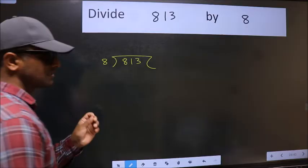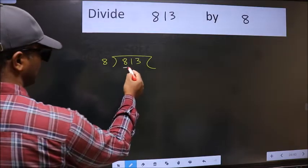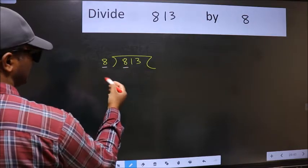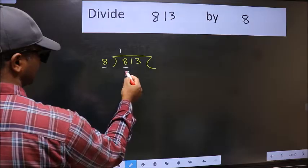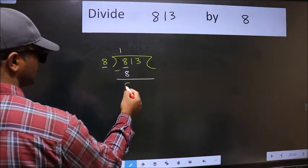This is your step 1. Next, here we have 8 and 8 here. When do we get 8 in 8 table? 8 once 8. Now we should subtract. We get 0.